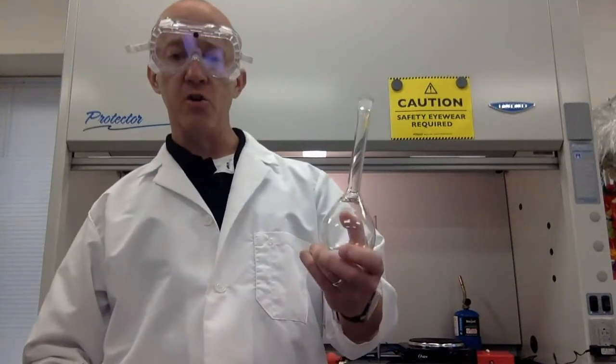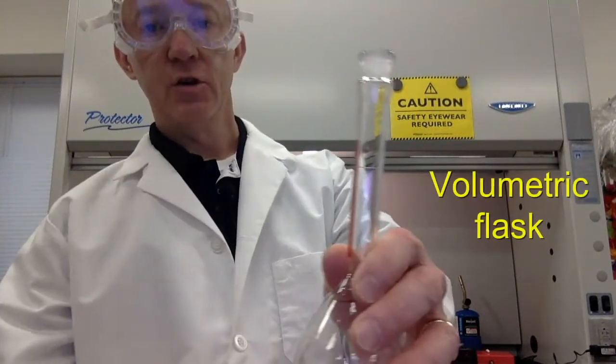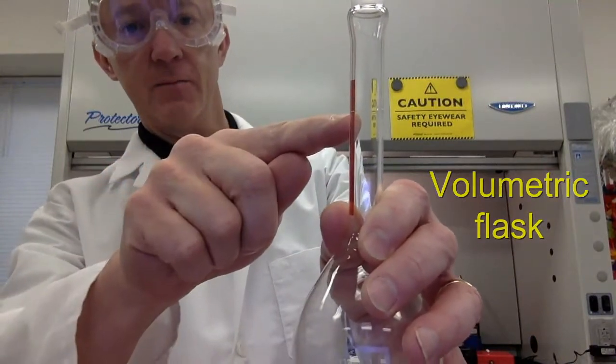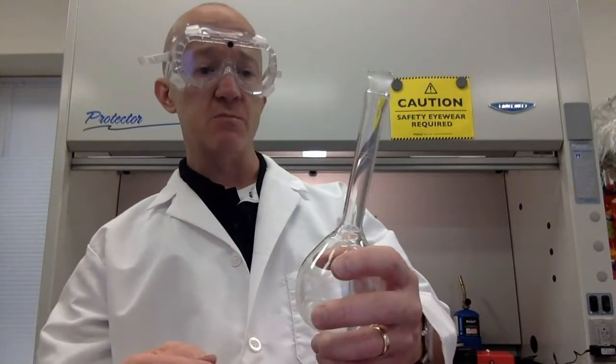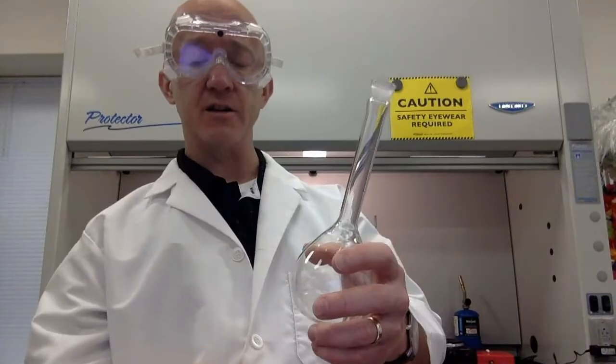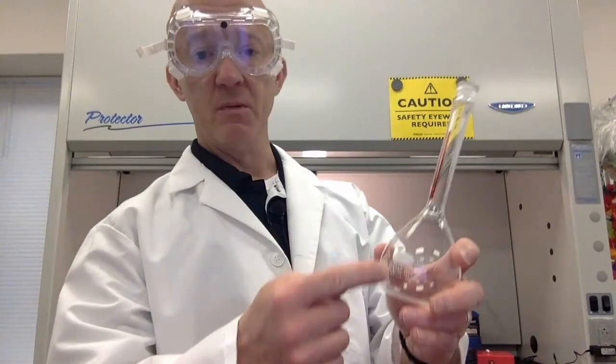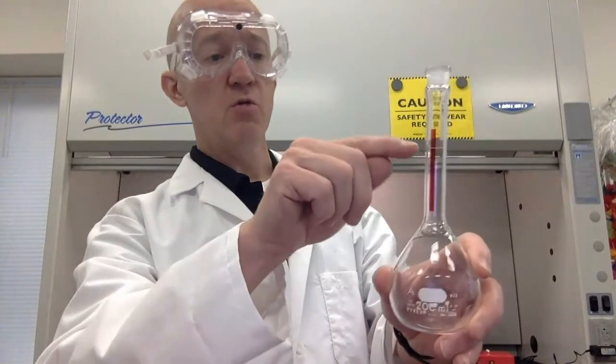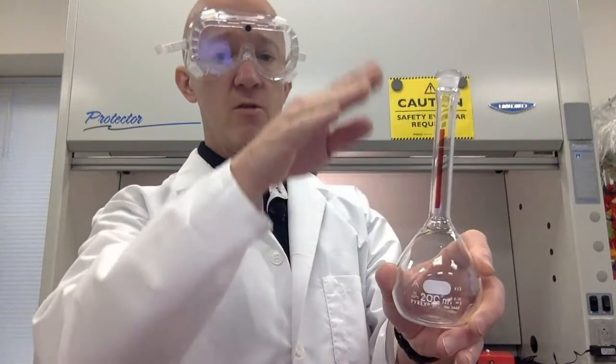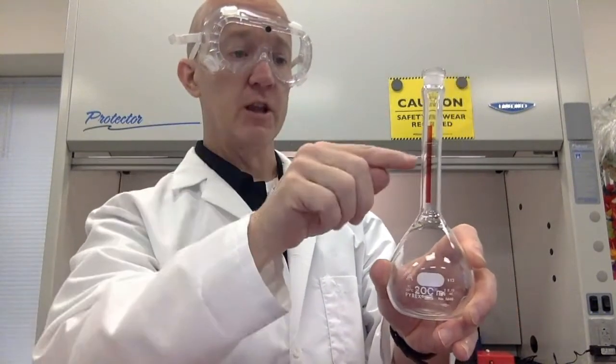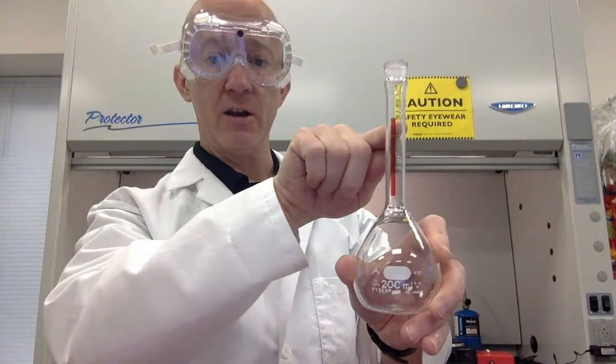This is called a volumetric flask. If you look closely, you can see a line right here. That line is used for very precise measuring of the contents within this flask. If we wanted to make 200 milliliters of solution, we would use this line and allow the curved portion of our liquid to sit right on that line. And that would give us precisely 200 milliliters in this case.